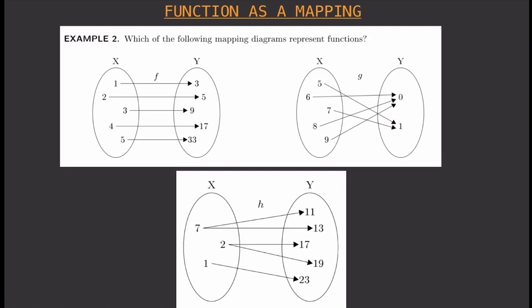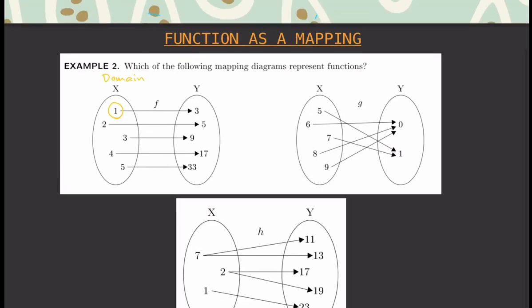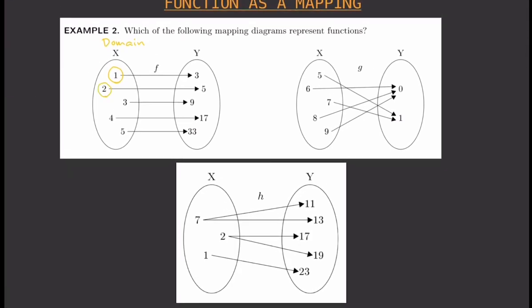We just have to make sure that the first entry, which is the domain — the X in set X — only gets paired to one value in the range. Another way to say it: look at the lines. There should only be one line that connects from each number in our domain.